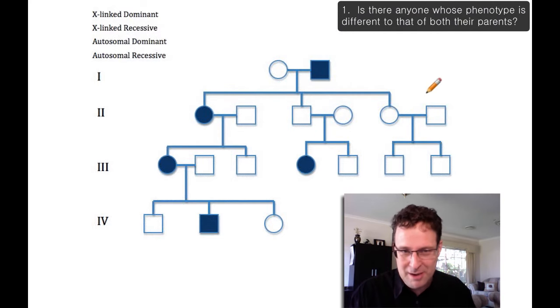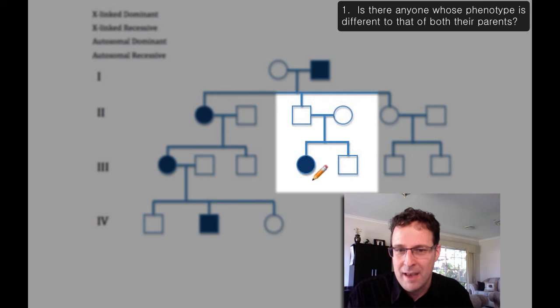And you should be able to see if you look at this pedigree that, yes, there is. This girl here is shaded. She has whatever the trait is that we're talking about. Neither of her parents are shaded. So her phenotype is different to the phenotype of both her parents.